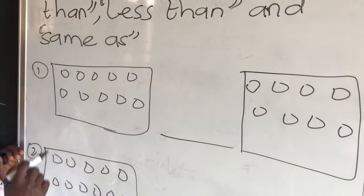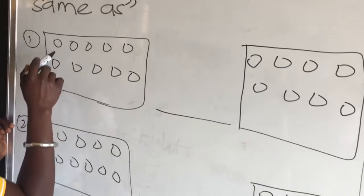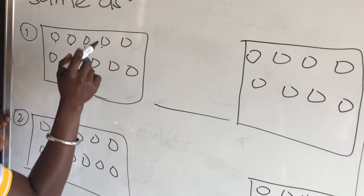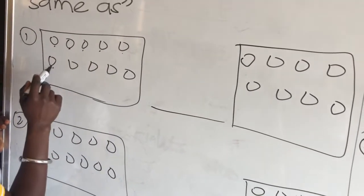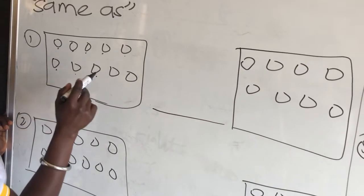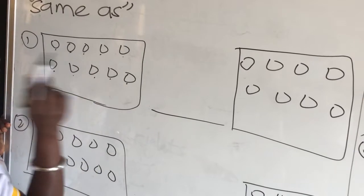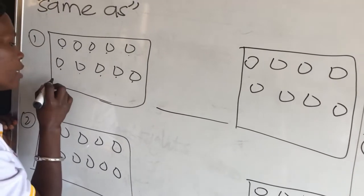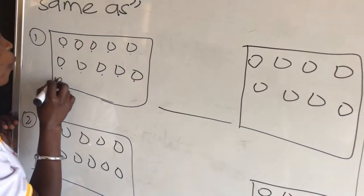Alright, so the first one: 1, 2, 3, 4, 5, 6, 7, 8, 9, 10. How many members here? 10. We write it somewhere.